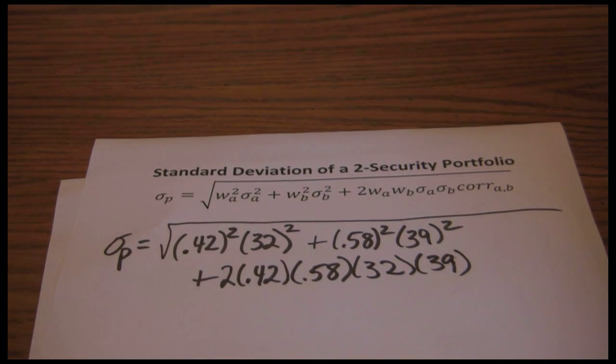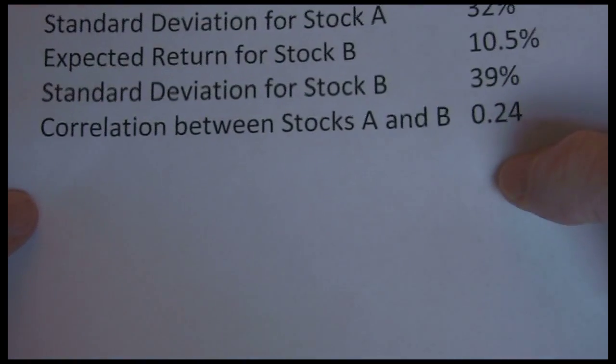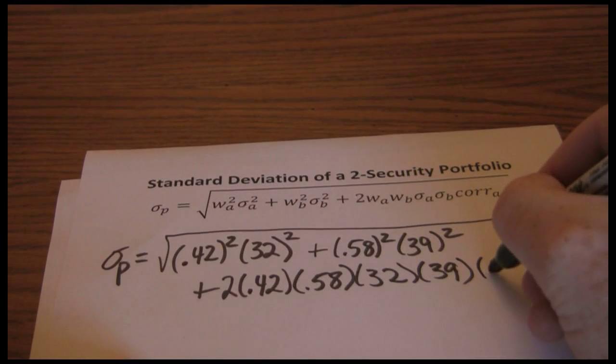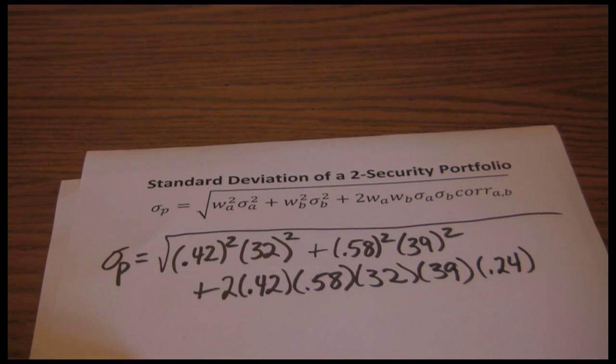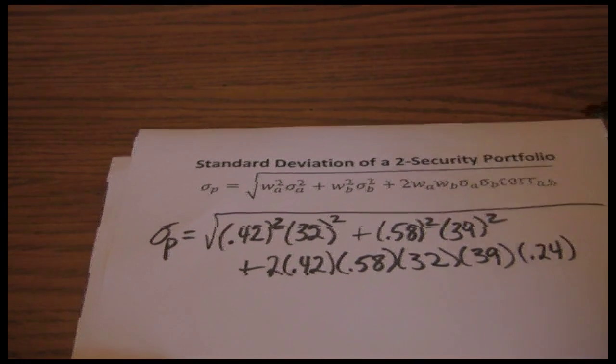And when we introduced the problem, we said the correlation for a and b was 0.24, a weak positive correlation. So now we have all the numbers plugged in, it's just time to go through the math.